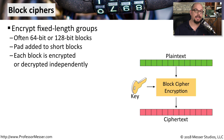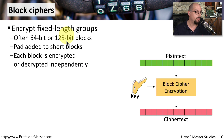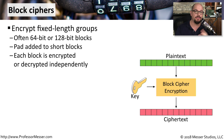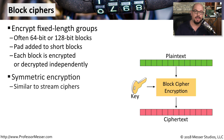Block ciphers are dealing with larger groups of information to encrypt, usually with 64-bit or 128-bit blocks. If the block is smaller than that, there will usually be a padding of information to bring it up to the minimum level. Each block is going to be encrypted and decrypted independently from the other blocks that we're using.